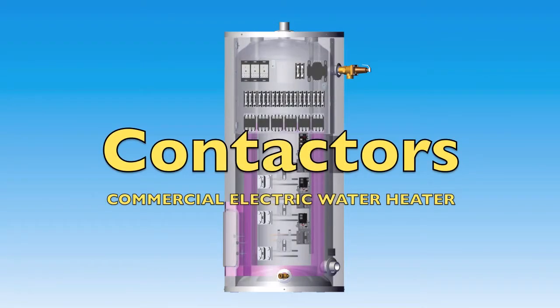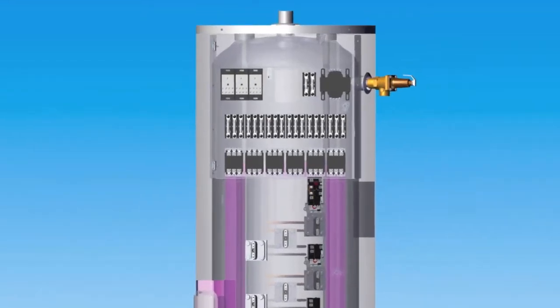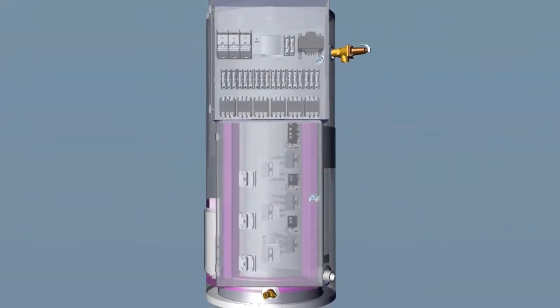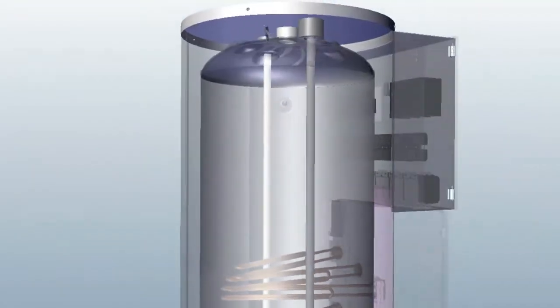Contactors. Each HTP commercial heater is equipped with one or more contactors, depending on the model, that supply power to the heating elements, providing that the ECO high limit is closed, the thermostat is below set point, and 120 volts AC is being supplied to contactors.